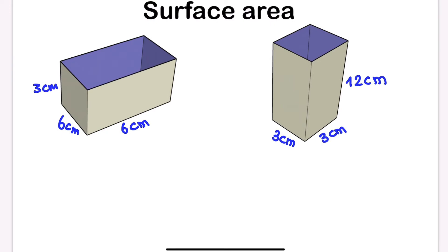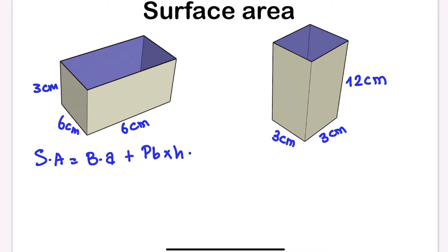Now let's calculate the surface area. We can use this formula: surface area equals the base area plus the perimeter of the base times the height. So again, surface area = base area + (perimeter of base × height).